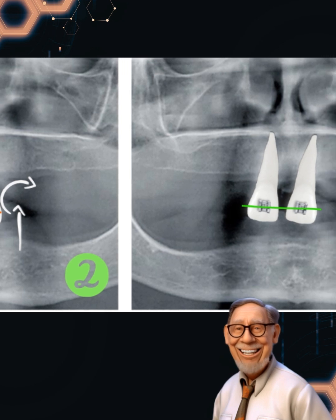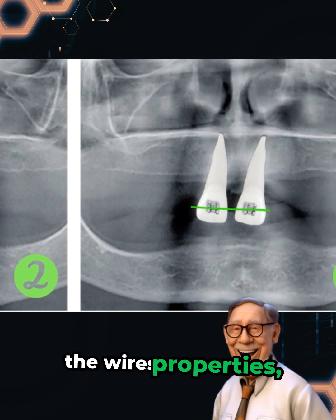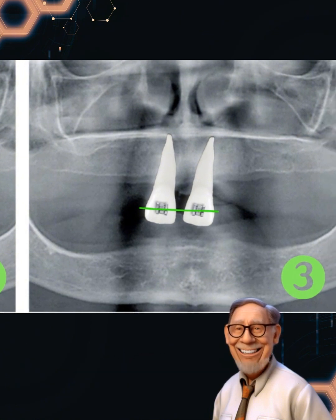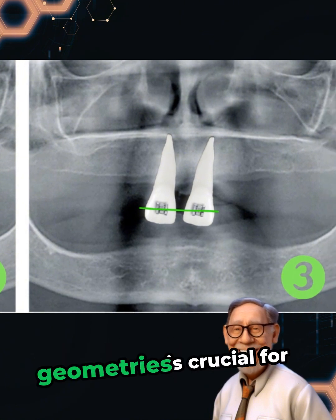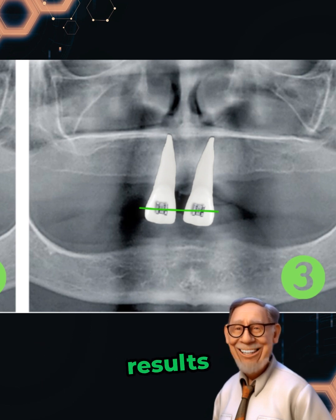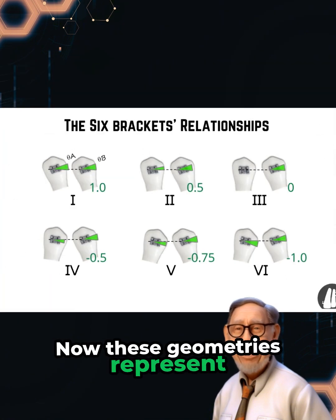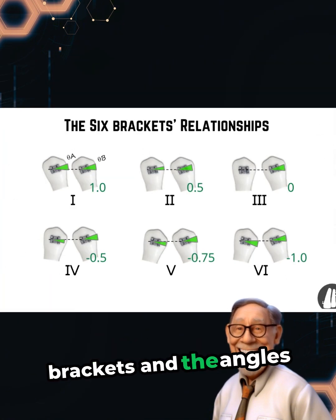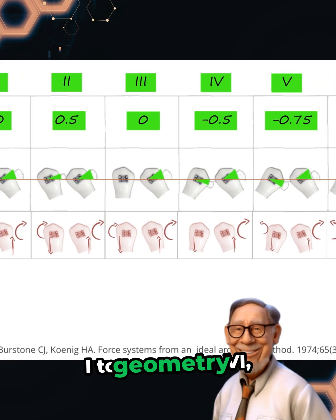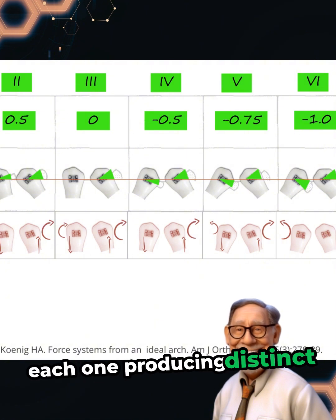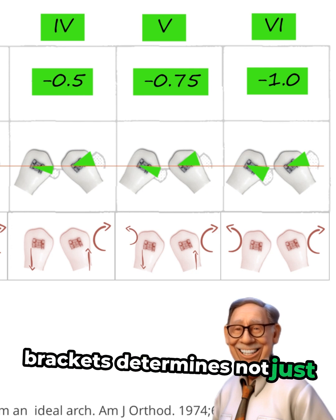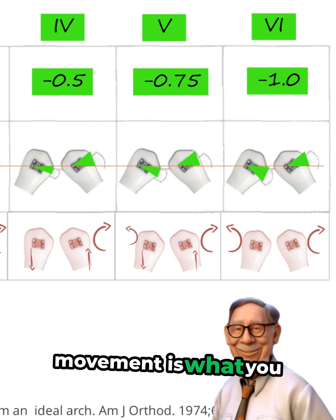Various factors, such as the angles of the brackets and the wire's properties, make it challenging to anticipate the exact forces that will be applied. That's why understanding these geometries is crucial for clinicians to avoid unwanted movements and achieve precise results. These geometries represent the different configurations of brackets and the angles between them, labeled from geometry 1 to geometry 6, each one producing distinct forces and moments. The geometry between the brackets determines not just how the teeth will move, but whether that movement is what you intended.